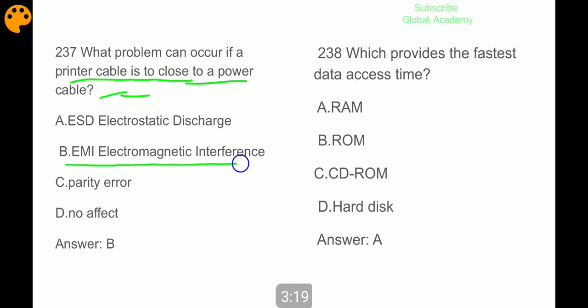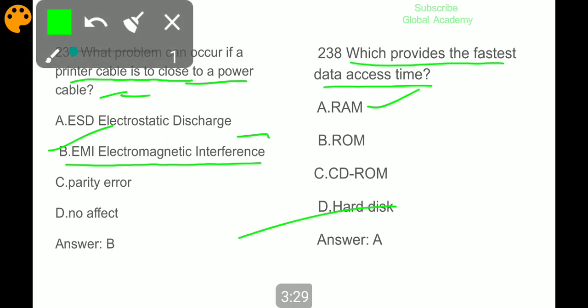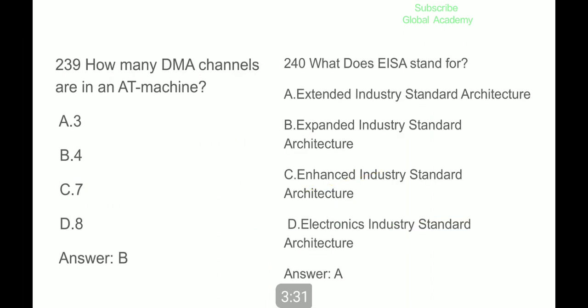What problem can occur if a printer cable is too close to a power cable? EMI electromagnetic interference. B part, which provides the fastest data access time? RAM. How many DMA channels are in an AT machine? 4. What does EISA stand for? Extended Industry Standard Architecture.